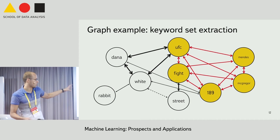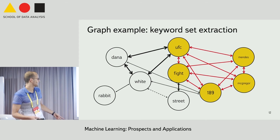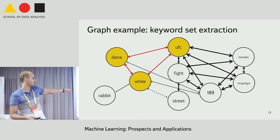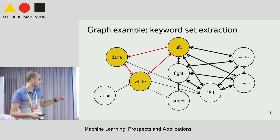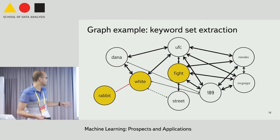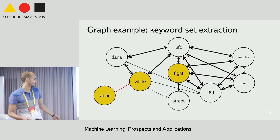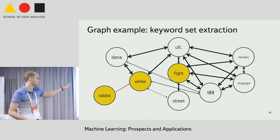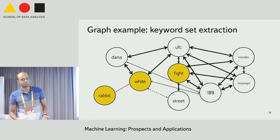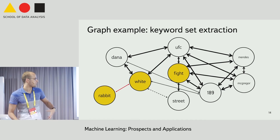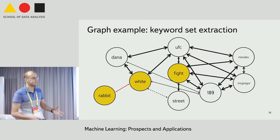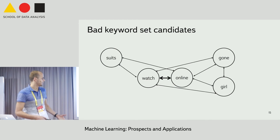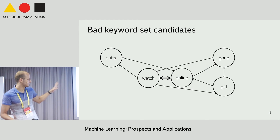Here is a good example of a keyword set: all the edges are wide, and it describes a particular fight — an ultimate fighting championship. This is another good example: all edges are wide and no other vertex can be added. This is a bad example, since there is a vertex not connected to two other vertices. We want the first two examples to be extracted and the third to not be extracted. We implement a heuristic procedure that extracts all those sets of vertices, and we call them keyword set candidates.